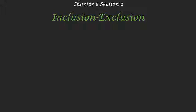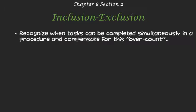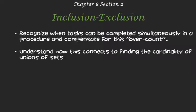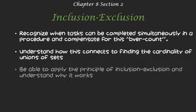What this principle tells us is how to deal with cases when we've overcounted — how do we compensate for that? After reading through the section and watching the video, you should be able to recognize when tasks can be completed simultaneously, as in the definition of the addition and multiplication principle, and be able to compensate for this overcount. You should understand how this connects to finding the cardinality of a union of sets, and be able to apply this principle of inclusion-exclusion.